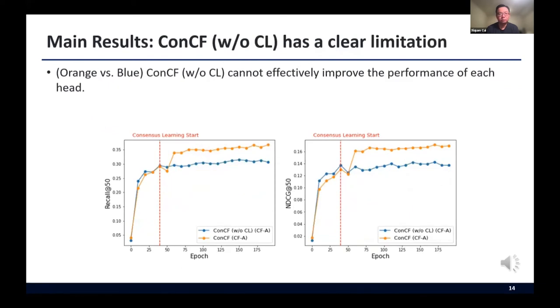Second, we observed that ConCF without consensus learning has a clear limitation. The below figure shows the training curves of ConCF and its ablation. We can see that ConCF without CL cannot effectively improve the performance of its head. Here, the knowledge of the objectives is exchanged only through the shared parameters, without guidance on the prediction level. Its limited performance shows the importance of providing accurate and direct guidance on the predictions.